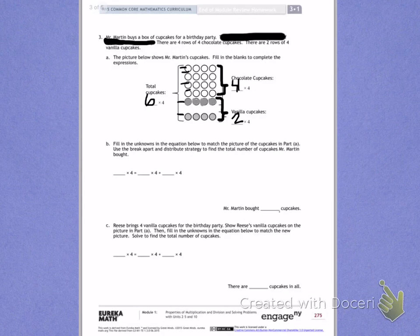Letter B. Fill in the unknowns in the equation below to match the picture of cupcakes in Part A. Use the break apart and distribute strategy to find the total number of cupcakes Mr. Martin bought. The total number of cupcakes he bought was the problem 6 times 4. He's breaking that problem apart into 4 times 4 and 2 times 4. I'm first going to find 4 times 4 and add it to 2 times 4.